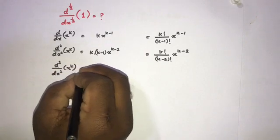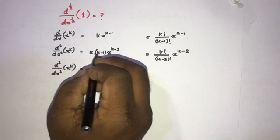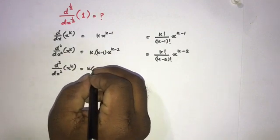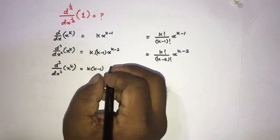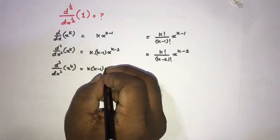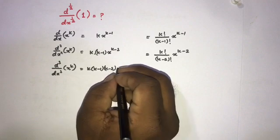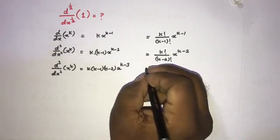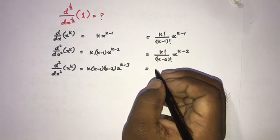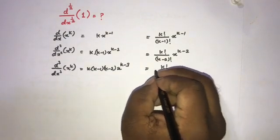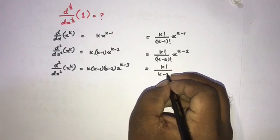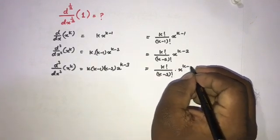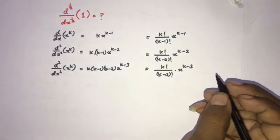Now I am going to take the third derivative of x to the k. We differentiate the second derivative again. k and k minus 1 are constants, so by the power rule we get k minus 2 times x to the k minus 3. We can write this as k factorial over k minus 3 factorial times x to the k minus 3.